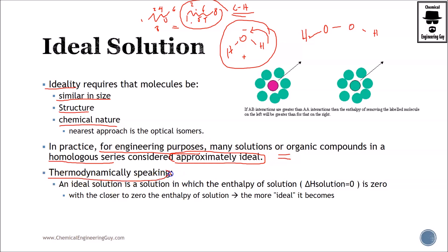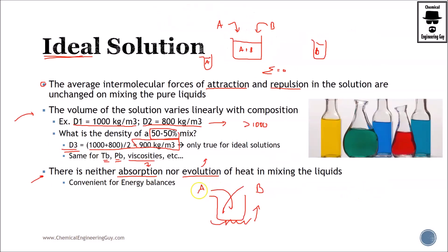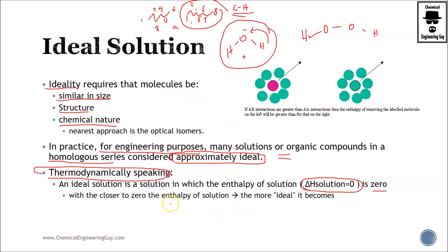Thermodynamically speaking, an ideal solution is a solution in which the enthalpy of solution is zero, meaning as stated before will not show temperature changes, will not give off or absorb heat. So the closer to zero enthalpy of solution, the more ideal a solution can be assumed.